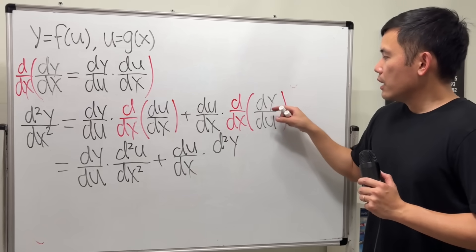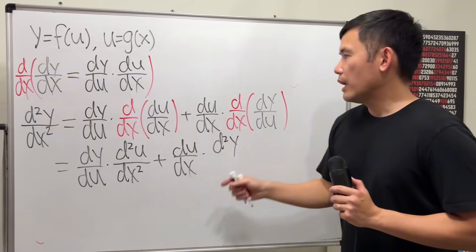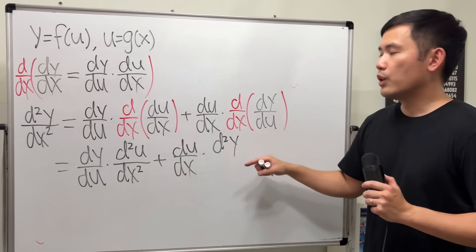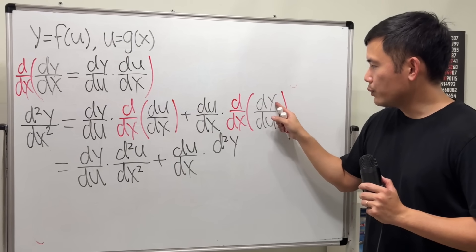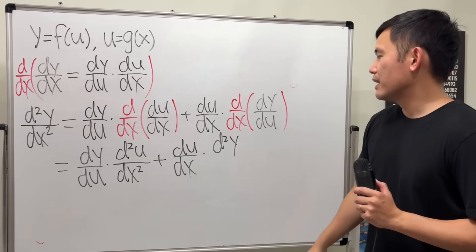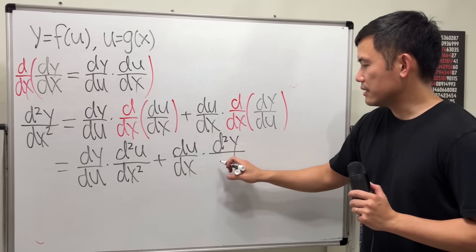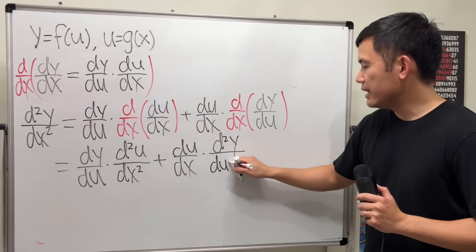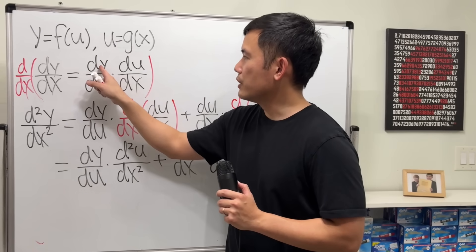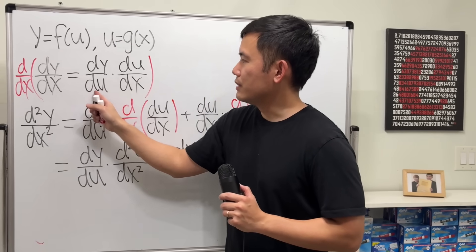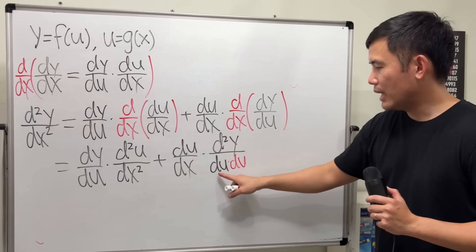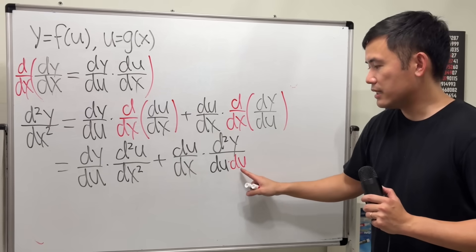Now, y is a function of u, and u is a function of x. When we differentiate this with respect to x, we first differentiate whatever we have here with respect to u first. But originally, we have du already, right? So, it's like this. Du, and then another du. Okay, it's kind of like this earlier. When we differentiate, we have to do it with respect to u first. So, that's why it's like d dy, and then you have the du from here, and then another du.